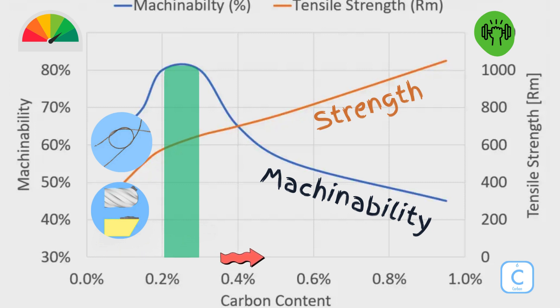Above 0.3%, the material becomes gradually harder, and therefore the wear is formed faster on the cutting edge.